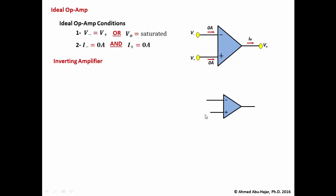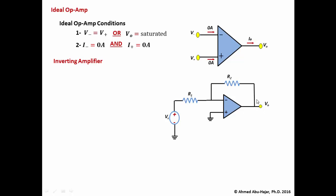In the inverting amplifier, we connect the non-inverting input to ground. We apply the input voltage source Vs through resistor R1 into the inverting input, v minus. Then we have a feedback resistor from the output back to the inverting input, called R2. The output is as indicated in the circuit.